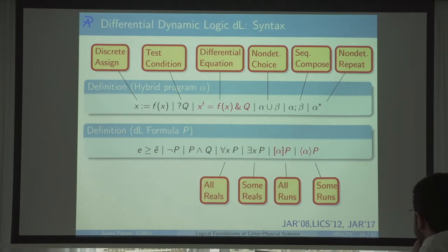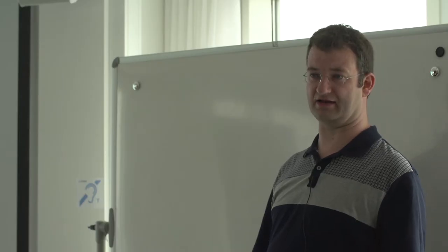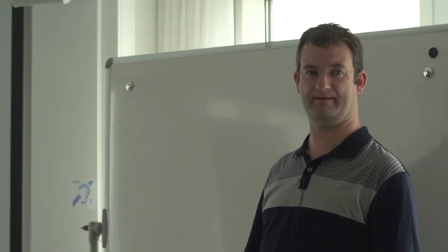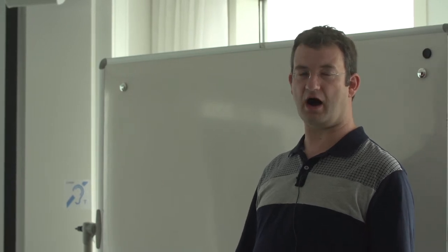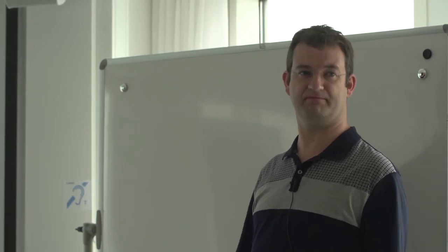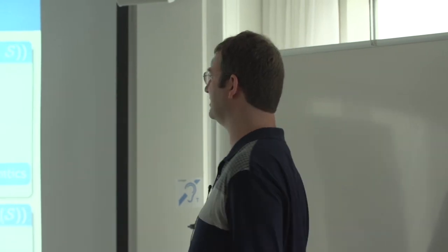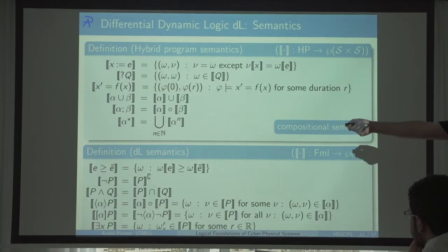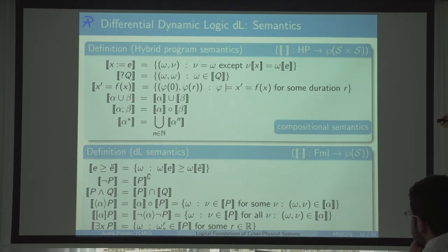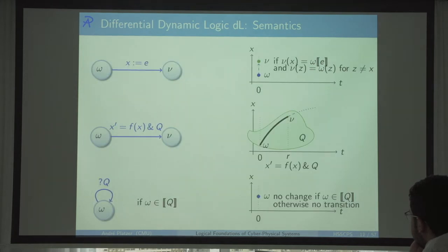The semantics fits on one slide and is compositional. For example, the semantics of the non-deterministic choice alpha ∪ beta program is exactly the semantics of alpha union the semantics of beta — union of relations and composition of relations. A discrete assignment takes me from an old state to a new state in zero time, where the new state has as value of x exactly whatever the old state had as the right-hand side E.